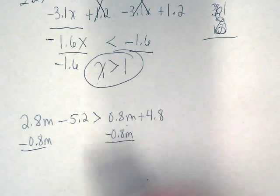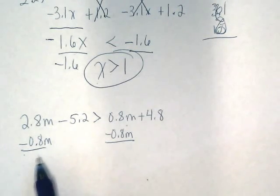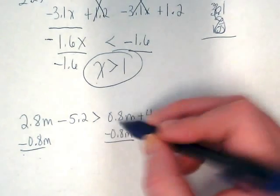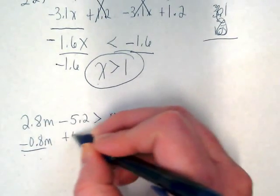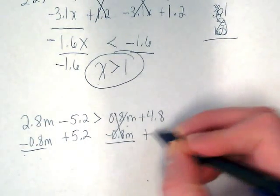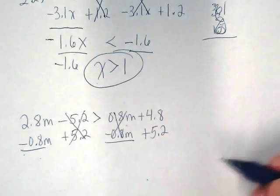Okay why did I move this over here? Because we want the variable on the left side of the inequality. That's going to cancel this so I'm going to add this to both sides so I can cancel the constant on the left.